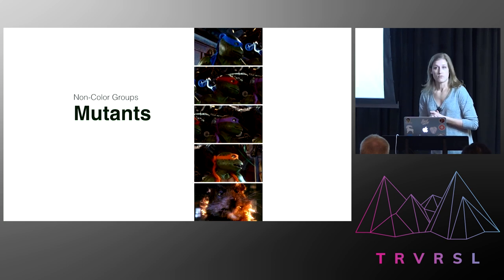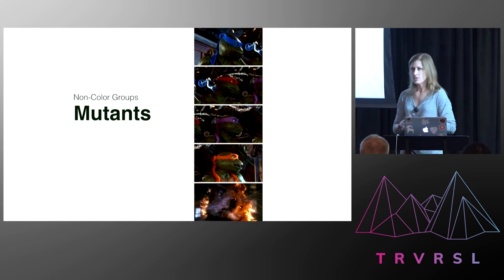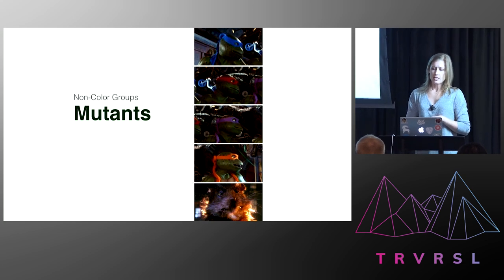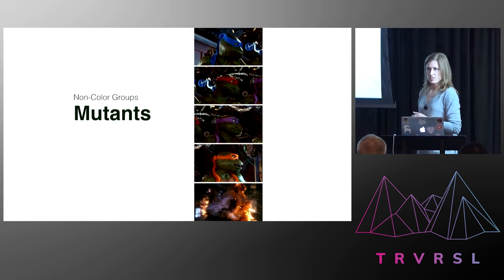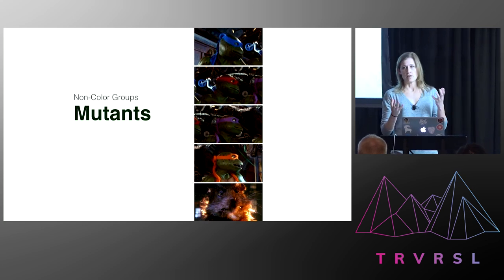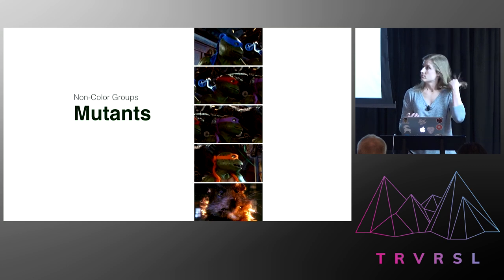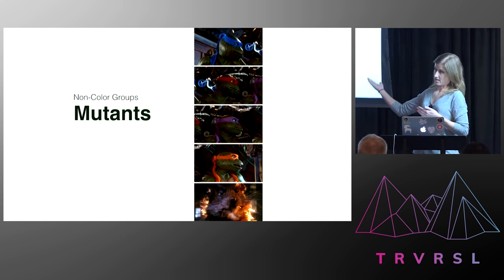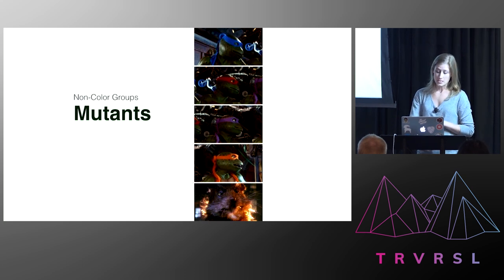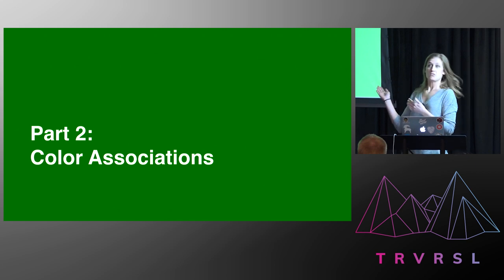The last group we'll talk about now is for mutants. It's not a color group strictly, but it's mutants. They tend to have fairly specific uses as well, very specific cultural associations. Examples of groups that fall into this category include things like the X-Men, Godzilla, and the Turtles. And this leads us to color associations.